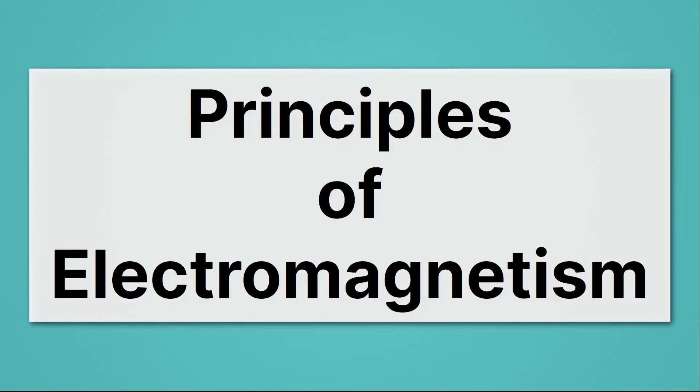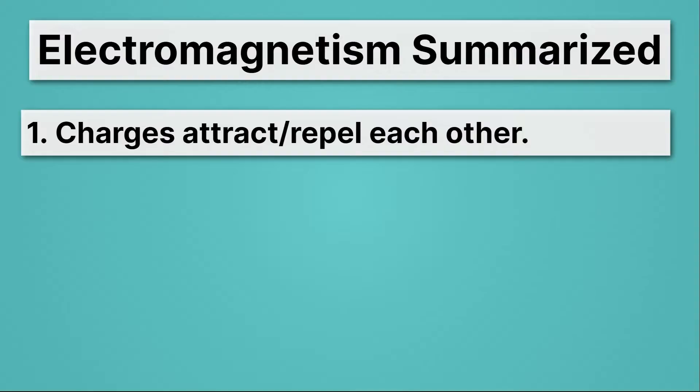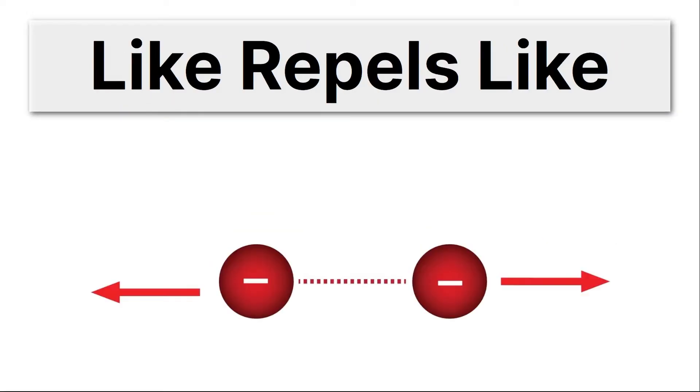So let's talk about the principles of electromagnetism. First up, charges attract and repel each other. So charges, like electrons and protons, negatively charged things and positively charged things, can attract each other, opposites attract, or they can repel each other. In this case, we have two negative charges. So they're similar charges, and they're going to repel each other.